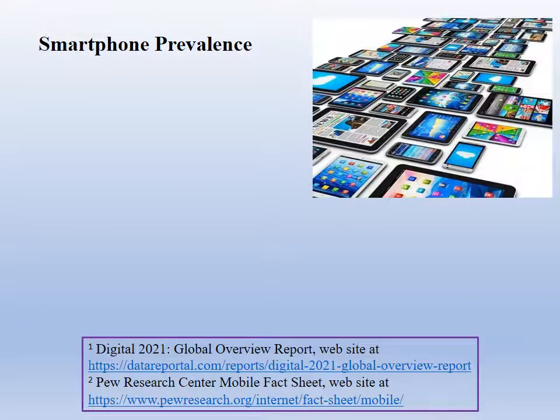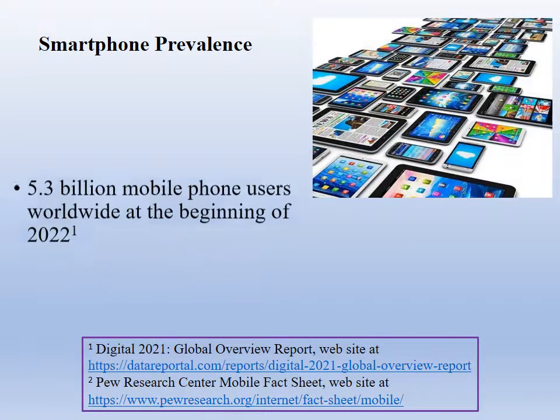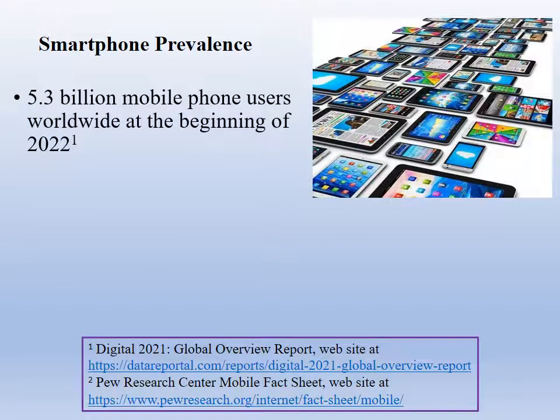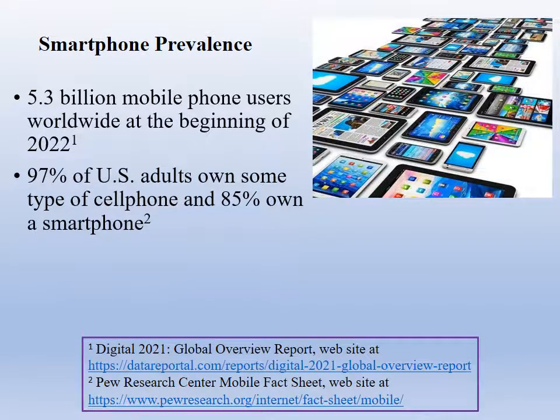Many websites provide extensive data on the ownership of mobile devices and smartphones in particular. There are many statistics we could use to discuss their prevalence, but all of them tell us what we already know — that they are extremely abundant. There were 5.3 billion mobile phone users worldwide at the beginning of 2022, with increases of 3% a year anticipated in the near future. The Pew Research Center reports that 97% of US adults own some type of cell phone and 85% own a smartphone.